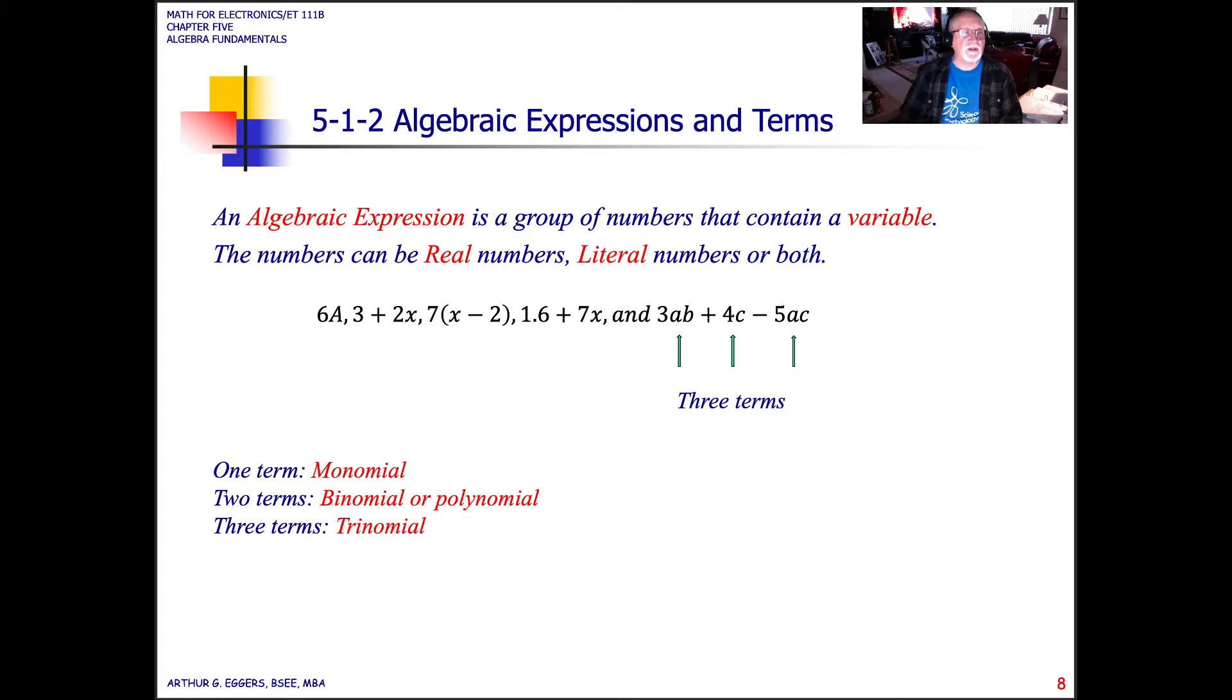An algebraic expression is a group of numbers that contain a variable. The numbers can be both real and literal. Often the real number becomes the coefficient. If we look at this last term with three terms, 3AB has a real and a literal value, but the 3 becomes the coefficient associated with AB. If we have one term, like 6A, we have a monomial. If we have two terms, we have a binomial or a polynomial. With three or more terms, a trinomial, which is also a binomial.